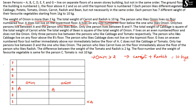Only two persons live between A and the one who likes bean. A is on floor 3, so counting up two floors places bean on floor 6. We also note that only one person lives between B and F, but since we don't yet know their positions, we hold that information.